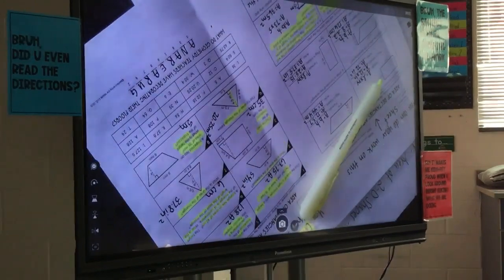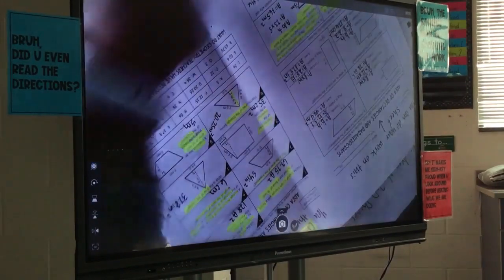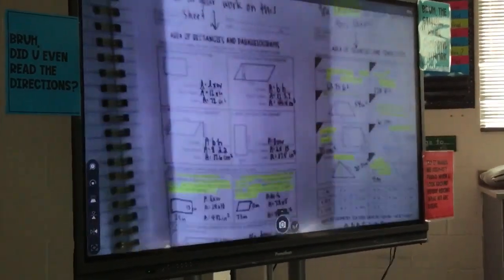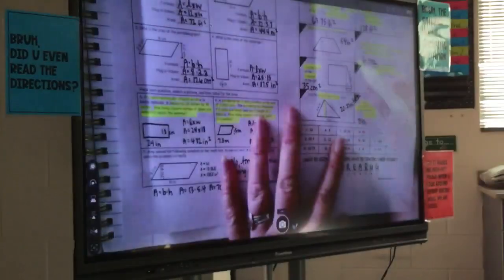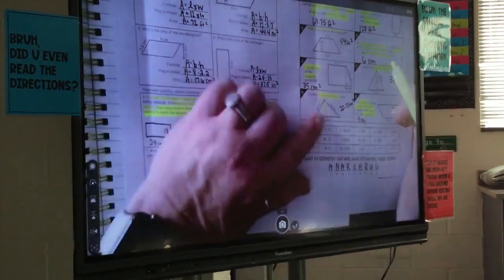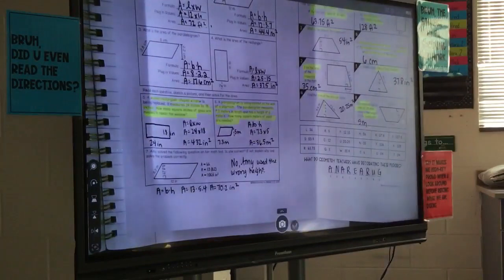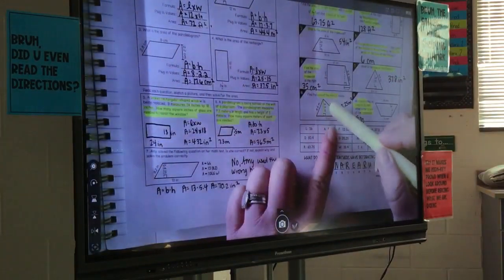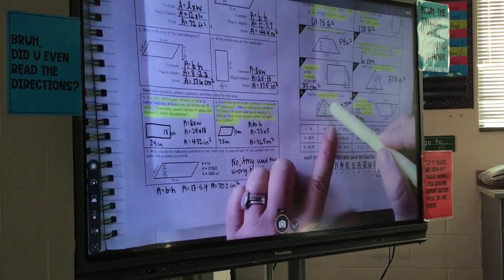That's an acute angle. So sometimes you just got to move your paper around or your iPad around depending on what the shape is. So this one, this is my base, this is my height. Does that form a 90-degree angle? Yes. So then I know that my base is going to be 9 and my height is going to be 4 and a half.